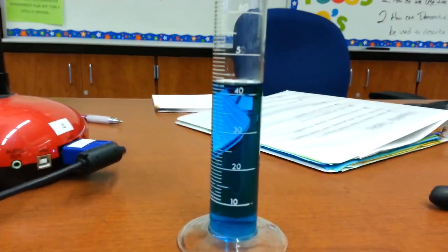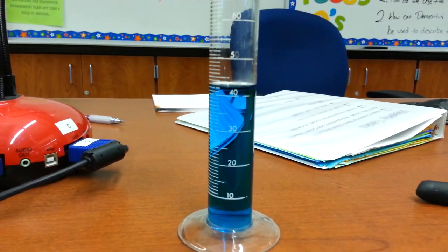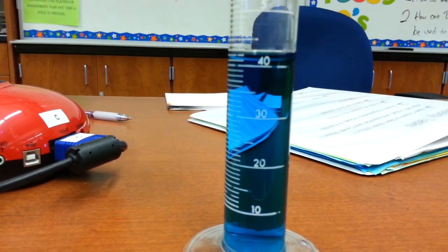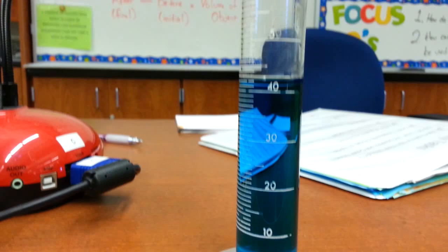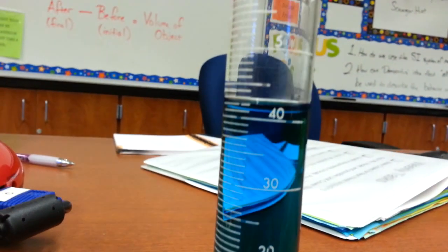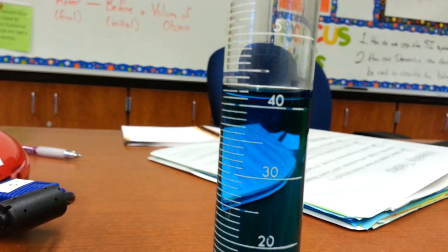So the first step when finding the volume of an object using displacement is to first read the initial volume that is in the graduated cylinder. And we do this by using these marks on there called gradations—again, why it's called a graduated cylinder—on the side.